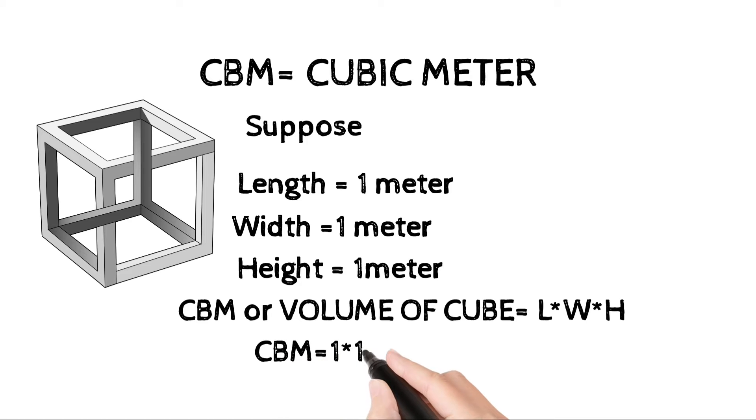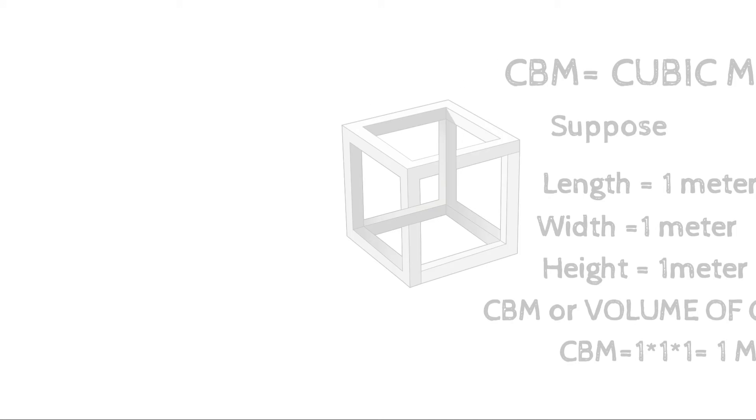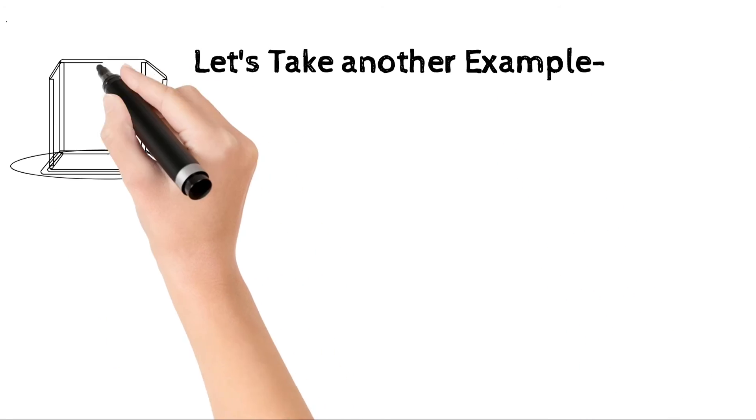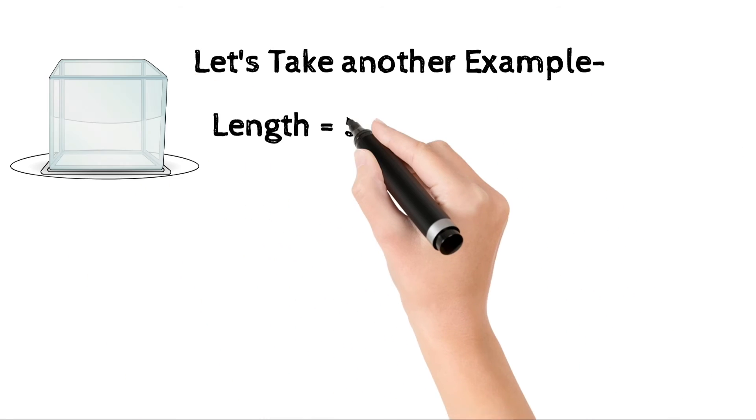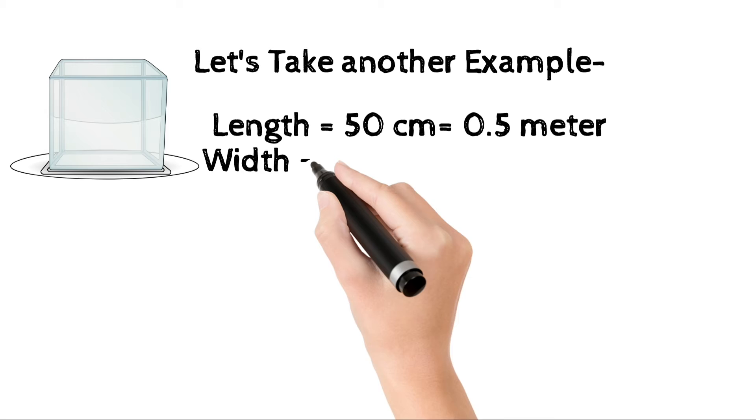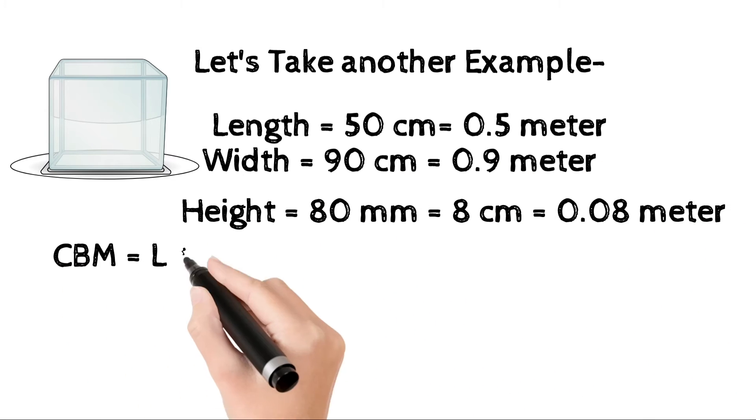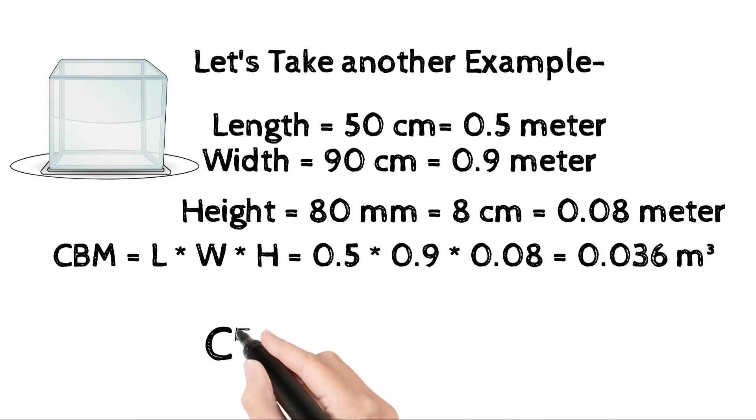Let's understand by another example. Take length, width, height as written and convert them into same unit and multiply length, width, height with each other and find out their result. I hope you understand the concept of CBM.